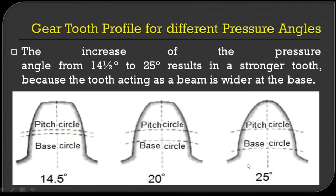Interference refers to the penetration of pinion teeth or gear teeth into the other tooth profiles. A sharp edge at higher pressure angles may cause interference — that is, the digging of pinion teeth into gear teeth or vice versa, forming grooves or depressions on the surface of the mating gear teeth. This disturbs the gear tooth profile, and such interference must be avoided to ensure proper motion and power transmission.